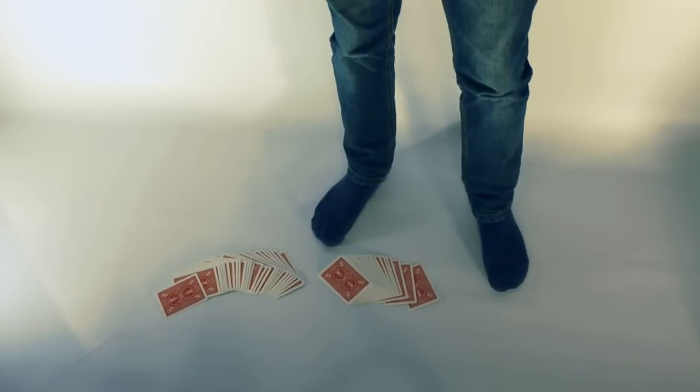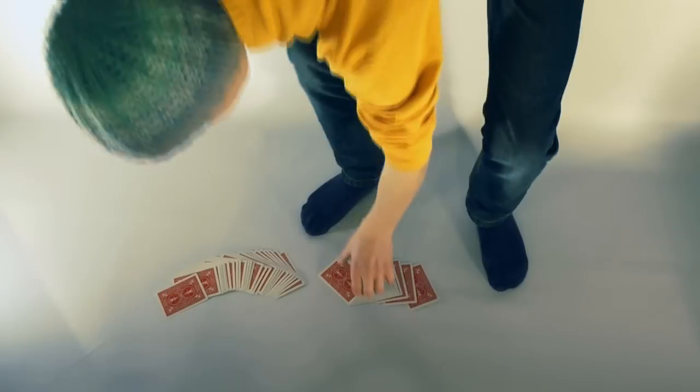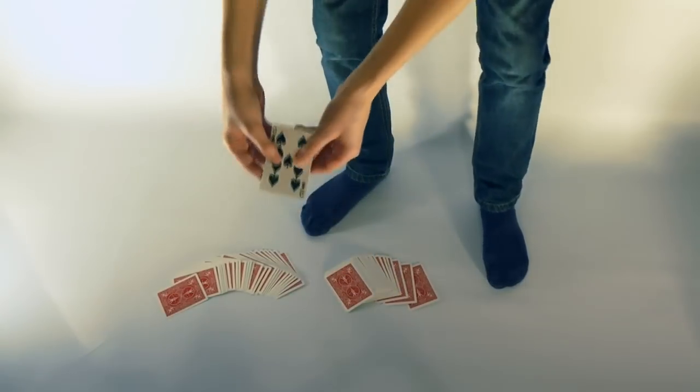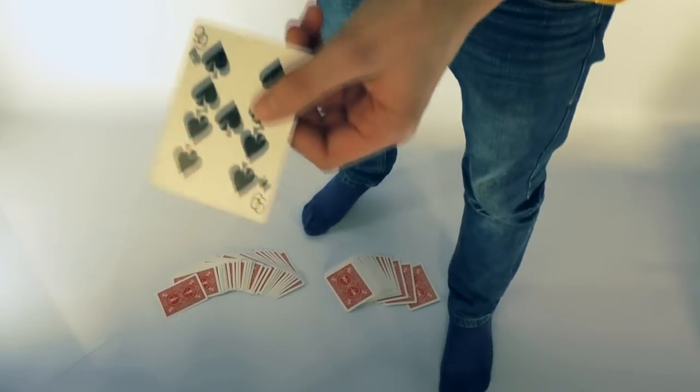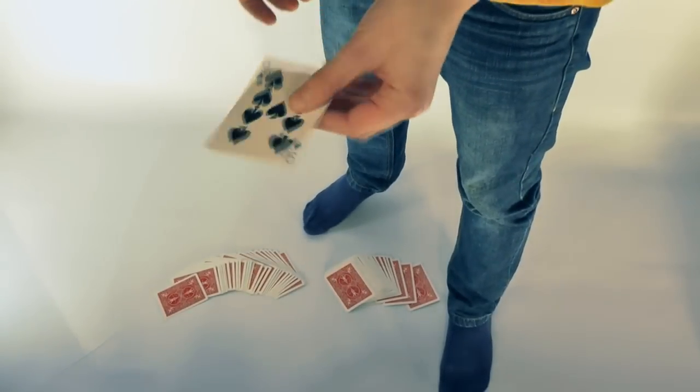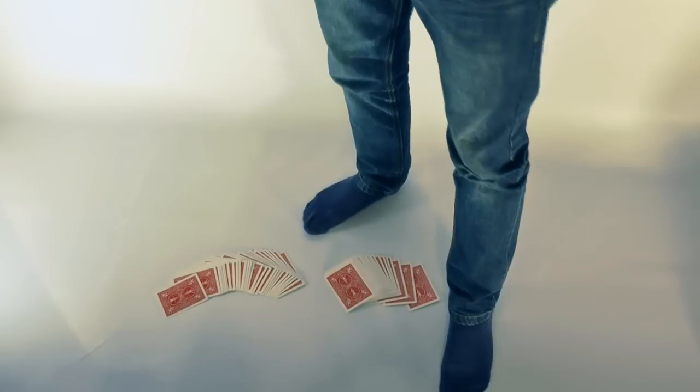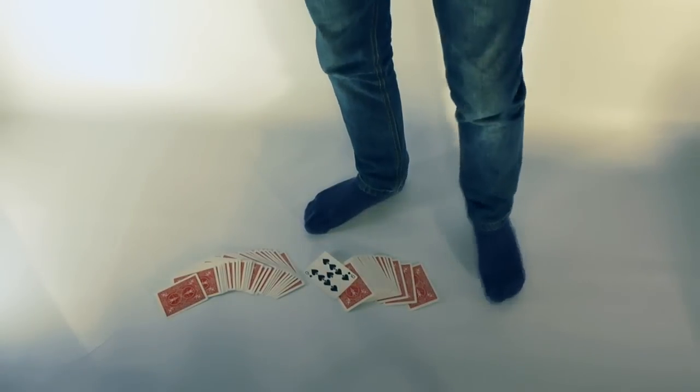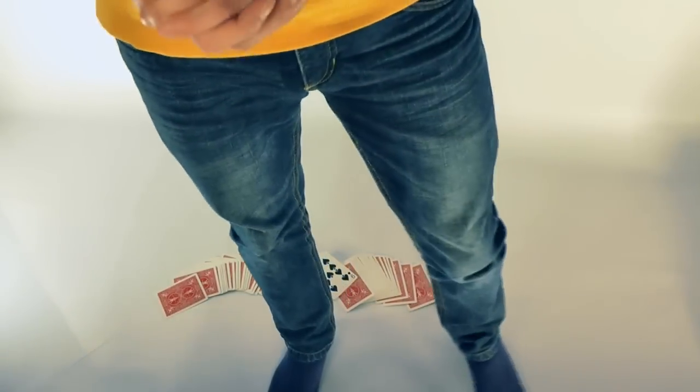by doing that, the deck splits right at one point, and at that point there's one card, and that's your selection, the nine of spades. And that's the sleight. I hope you liked it. Thanks for watching, please thumbs up, comment,